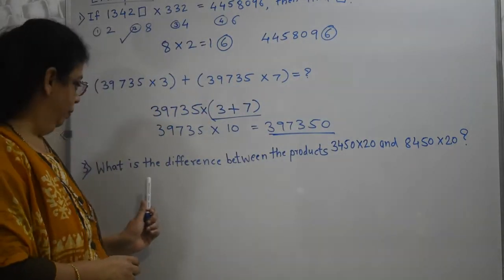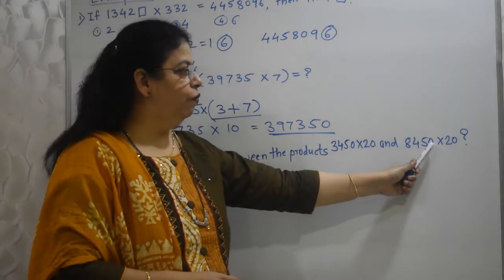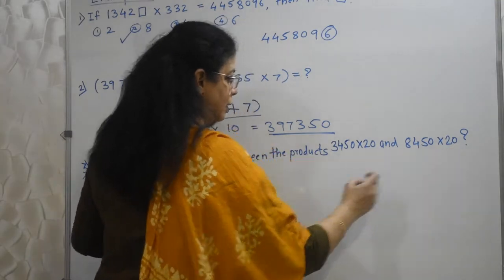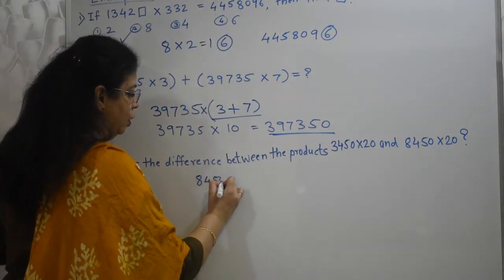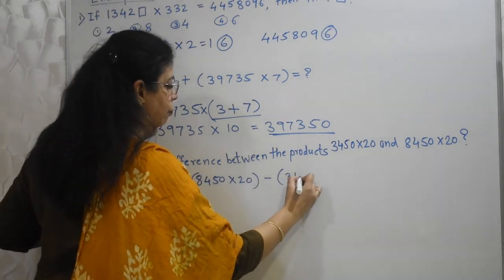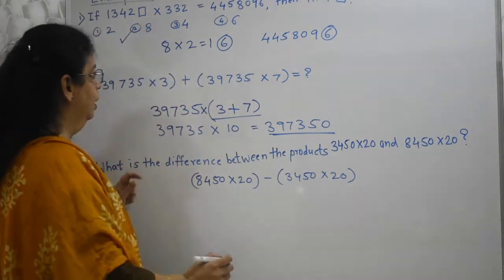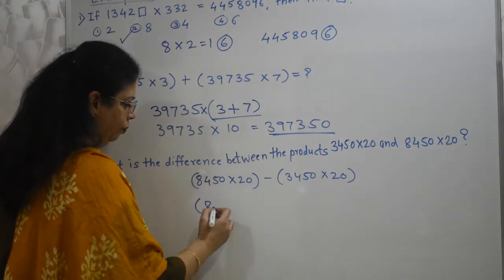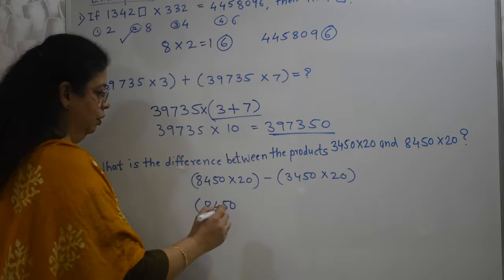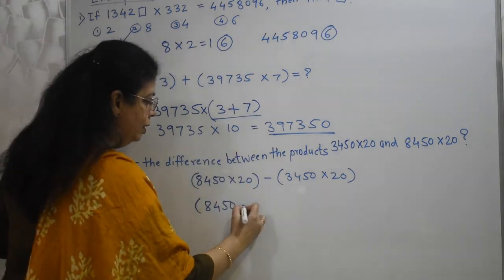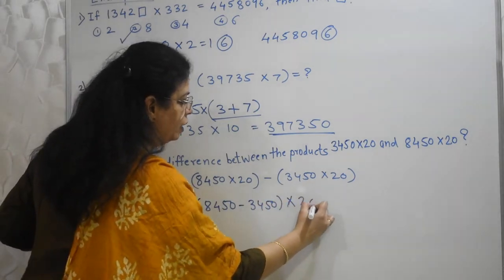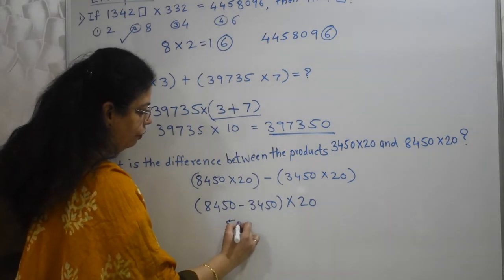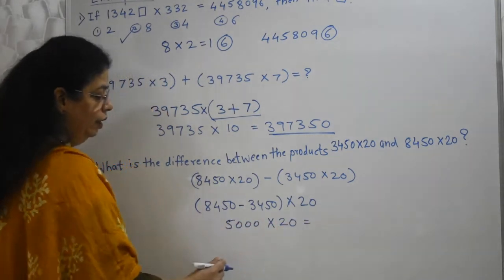Next one. This is a similar one. What is the difference between the products? 3, 4, 5, 0 into 20 and 8, 0, 5, 0 into 20. Obviously, this number is bigger. So I have to minus this from this. So I am writing this in mathematical term. 8, 4, 5, 0 into 20 minus 3, 4, 5, 0 into 20. Here if you observe, into 20 is common. So I will take it out into 20. What will remain here? If I remove into 20, 8, 4, 5, 0 minus 3, 4, 5, 0 is just 5,000 into 20.